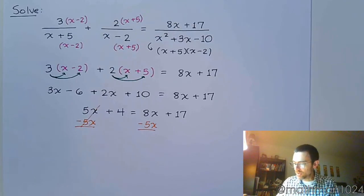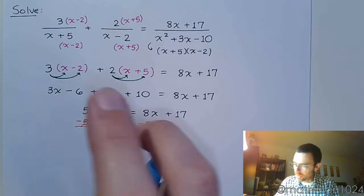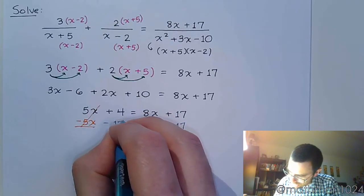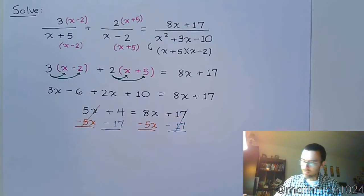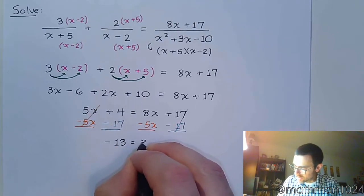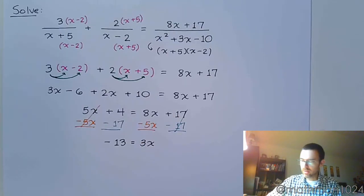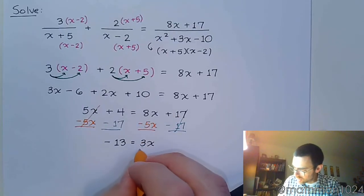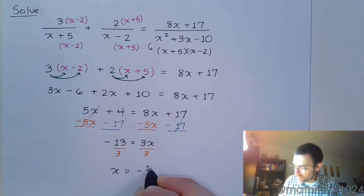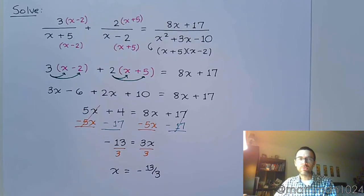All right, so I move my variables to the right. Constants need to go to the left, so subtract 17 and subtract 17. All right, so this gives me negative 13 is equal to 3x. We finish by dividing both sides of the equation by 3. So x is equal to negative 13 over 3. Now, I know that's an improper fraction, but it's simplified. I'm going to leave it that way.